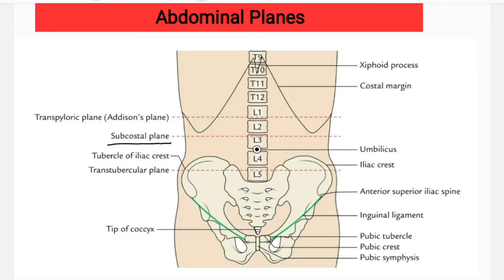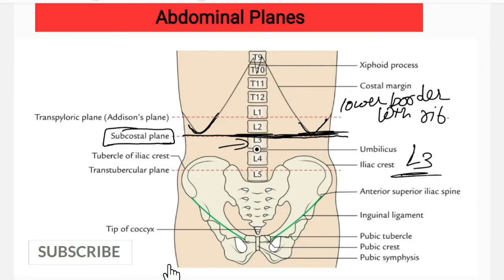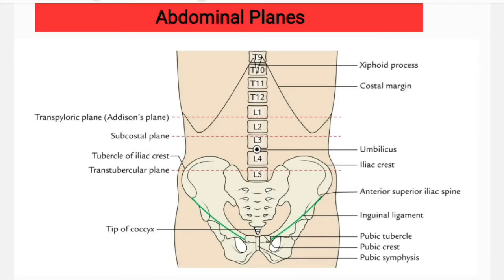The next plane, number two, is the sub-costal plane. This is a horizontal line passing just below the lowest margin of the costal cartilages. Anteriorly it passes through the lower border of the 10th rib, and posteriorly it passes through the L3 vertebra.